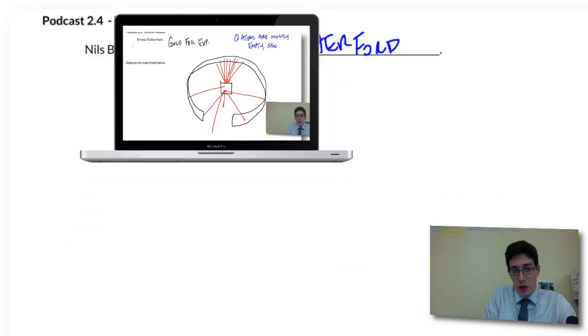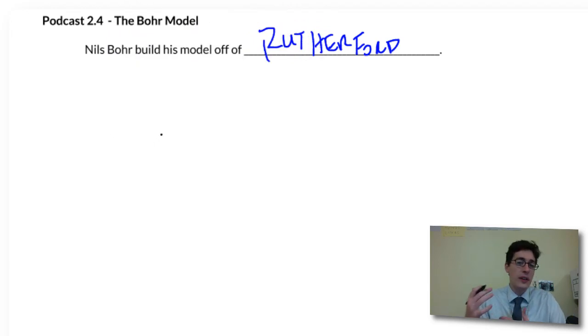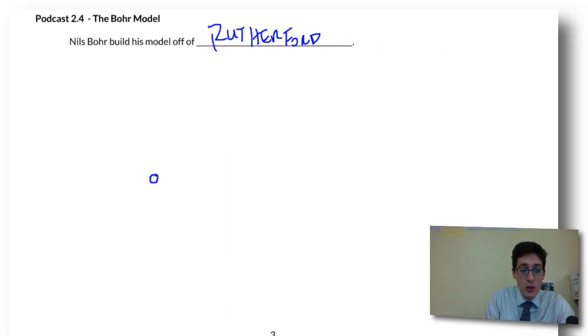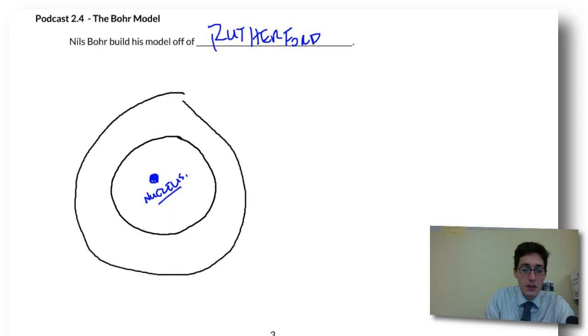What Niels Bohr saw was that electrons could have different energy levels. He saw this when he looked at different colors of light. He came up with a model of the atom that looked like a big target. In the middle of his atom, he had a very dense nucleus. This nucleus was then surrounded by electrons. He'd have one ring of electrons, and then outside that there would be another ring of electrons. And outside that, there would be another ring of electrons. And this goes on and on.